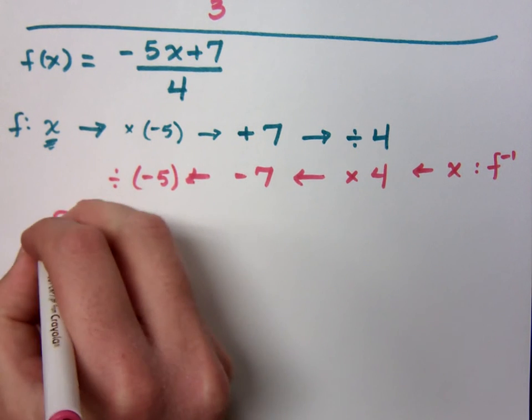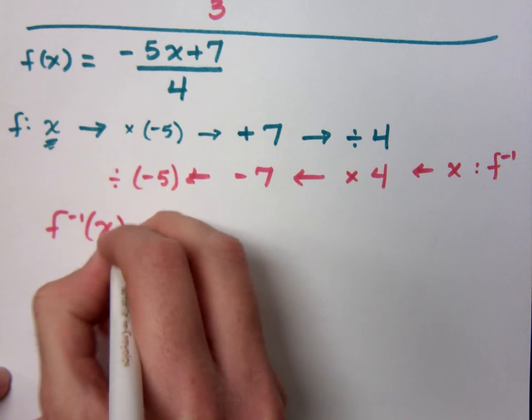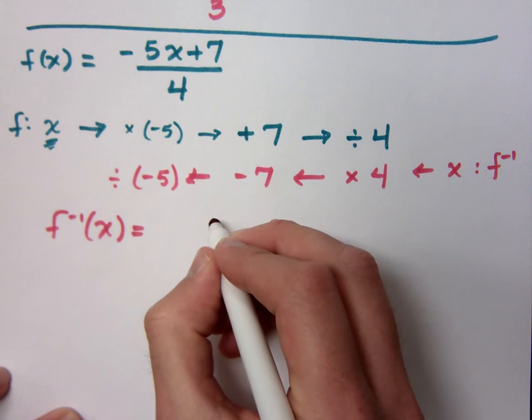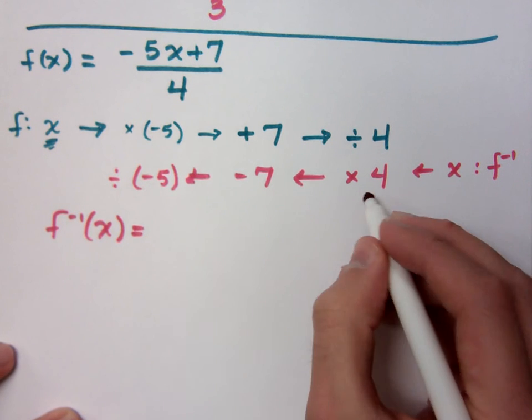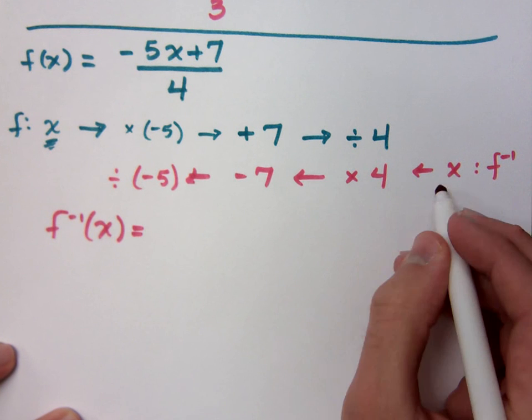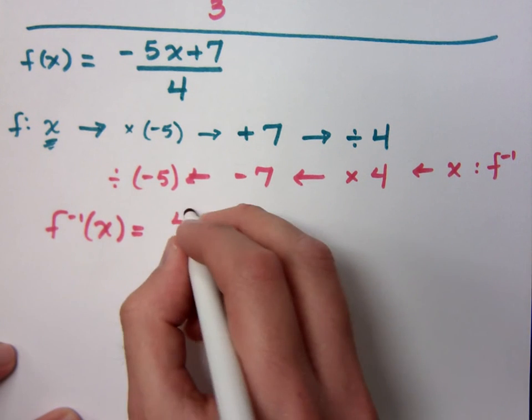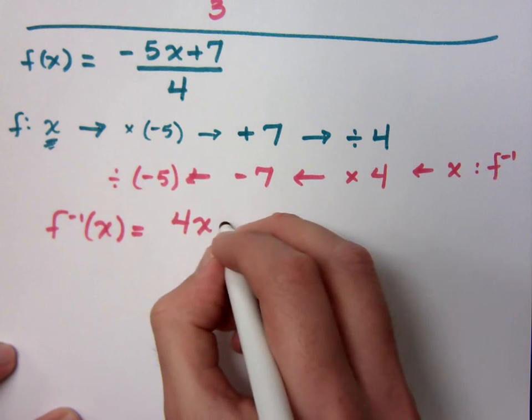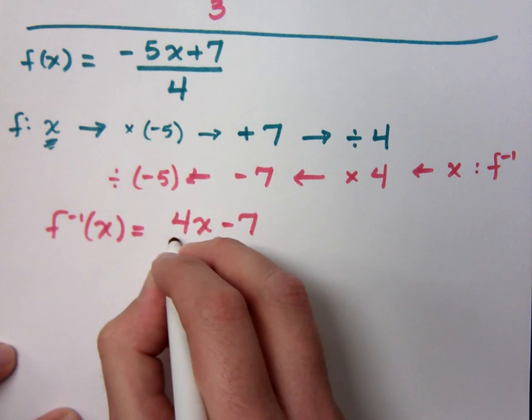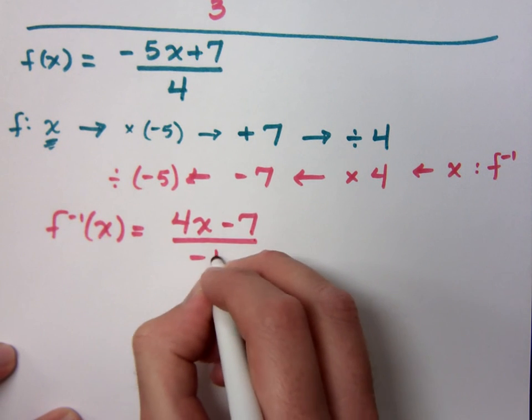So when I write my inverse function, what am I going to do with my x first? Watch the arrows. I'm going to multiply it times 4, so that's 4x minus 7. The whole thing is divided by negative 5.